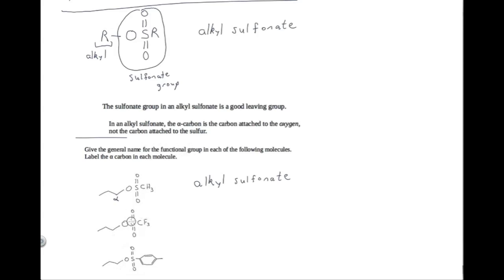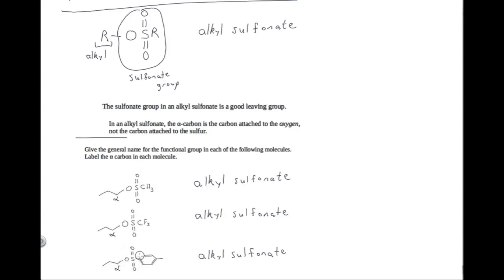Try the same exercise for this molecule. Again, we should recognize this is another alkyl sulfonate because this group matches the pattern, and again the alpha carbon is the carbon attached to the oxygen, not the carbon attached to the sulfur. Try the same exercise here — again this group matches the pattern, so this is a third alkyl sulfonate and the alpha carbon is the carbon attached to the oxygen. All of these alkyl sulfonates have good leaving groups, which means all of these alkyl sulfonates can participate in SN2 reactions.